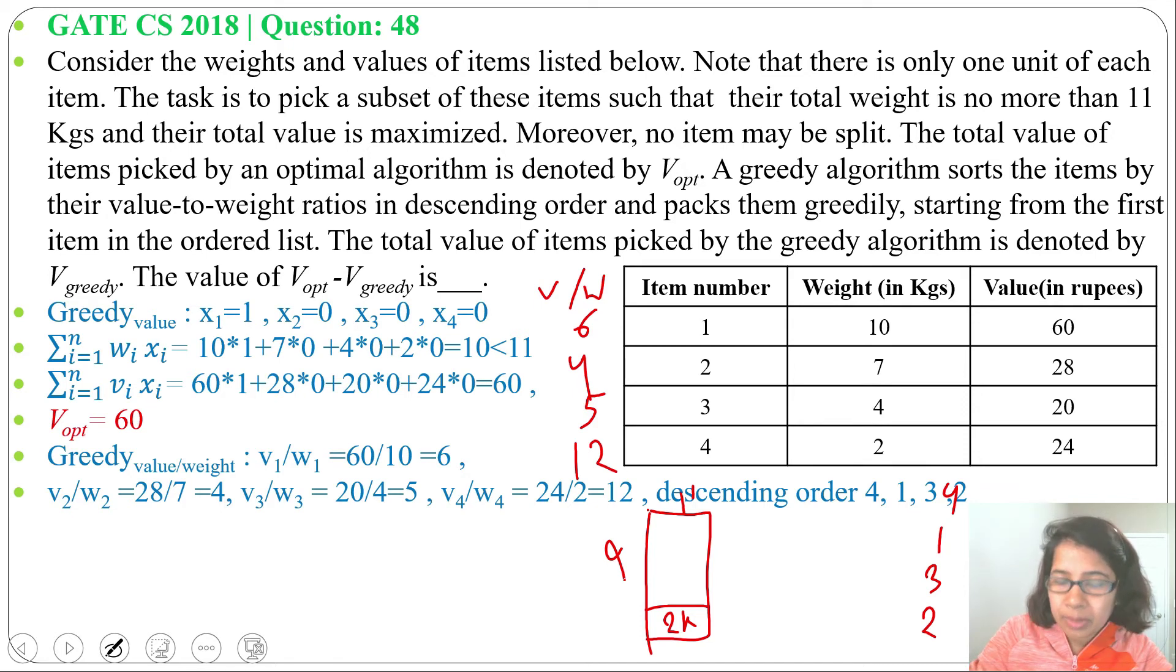Next we will check item 3. Item 3 weight is 4 kg, so we will pick item 3. Now 2 + 4 = 6. 5 kg left.